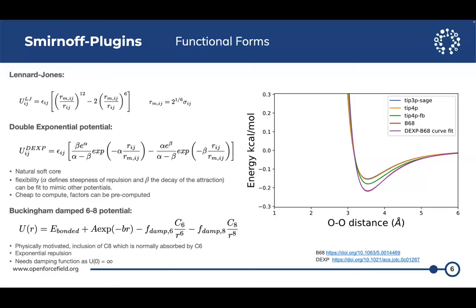We had to decide which functional forms we're interested in. Looking through the literature, there are a lot of new functional forms — people tend to develop these for water because there's a lot of experimental data. What we've implemented so far are two new functional forms in SMIRNOFF plugins: the Buckingham 6-8 damped potential, which is physically motivated with an exponential repulsion term, higher-order dispersion expansion, and a damping function; and also a quite different double exponential term, where two exponentials govern the repulsion and attraction terms.